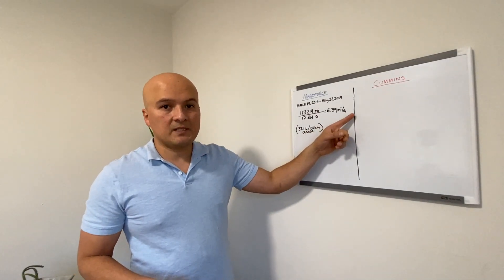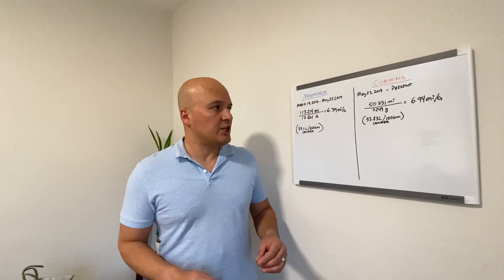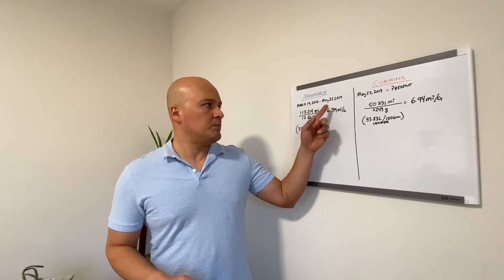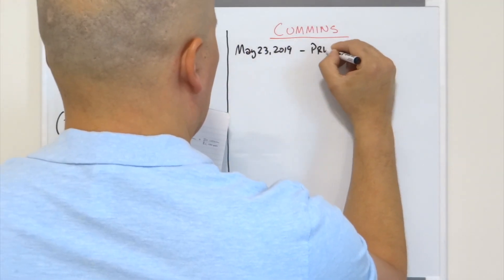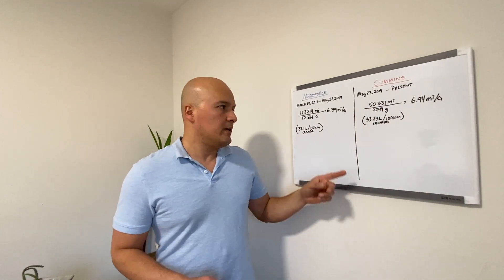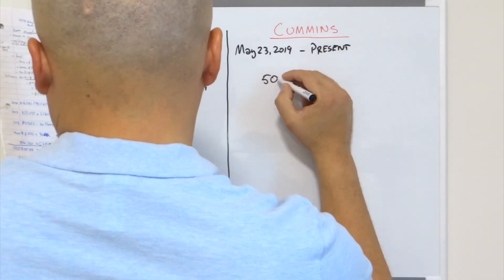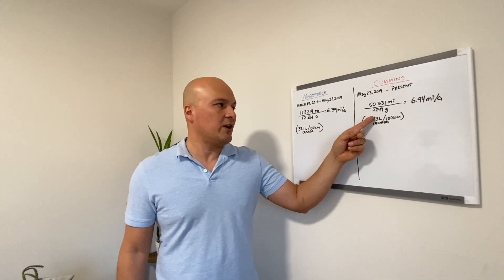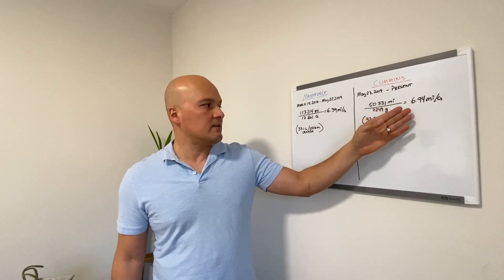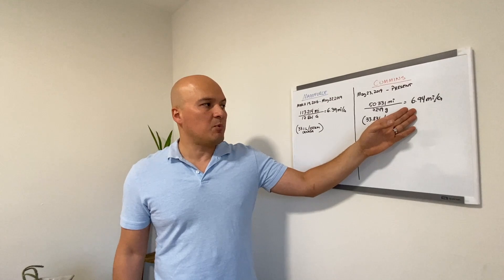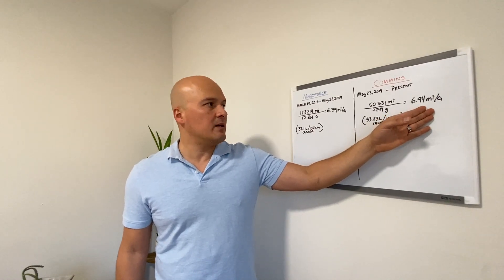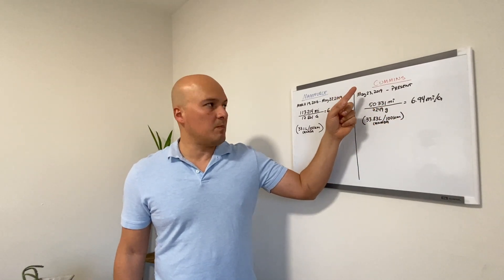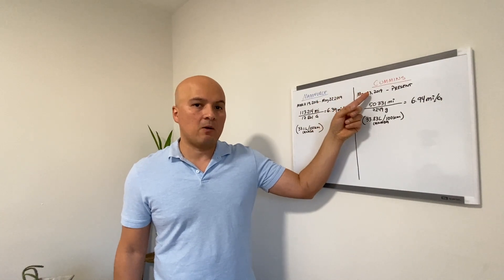Now let's see the Cummins side. So for the Cummins engine, I've owned it pretty much from May 23rd till present. And the calculations came in at 50,331 miles, 7,249 gallons. And we get our winner here, 6.94 miles per gallon, despite it being the higher horsepower engine.